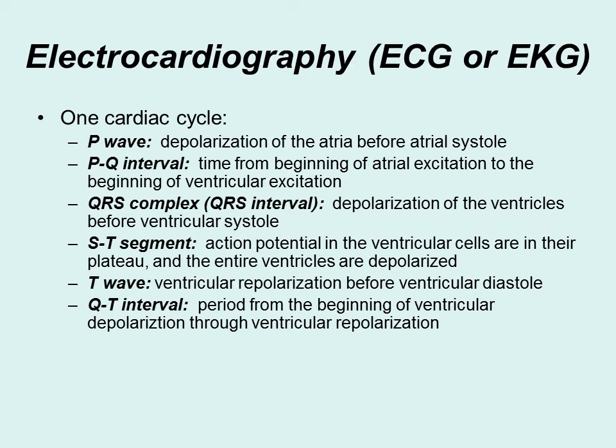Electrocardiograms — ECG or EKG — measure the various cardiac cycles. There are different waves: you normally have an initial flat line, and then a series of waves and peaks. These correspond to the depolarization of the atrium, the depolarization of the ventricles, and repolarization. In one cardiac cycle, you will initially see the P wave, which is when depolarization of the atrium occurs.